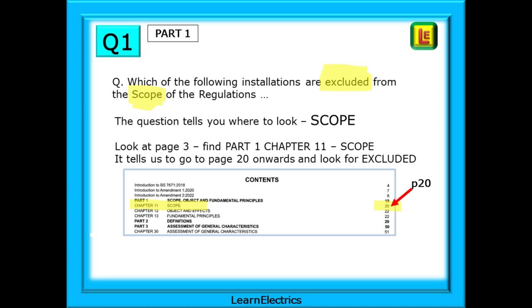The question actually tells you where to look. It contains the keyword scope and if we look at page 3 and find part 1 we will see that chapter 11 is about the scope of the regulations. The answer will be here and page 3 is now telling us to go to page 20 onwards to find the answer.